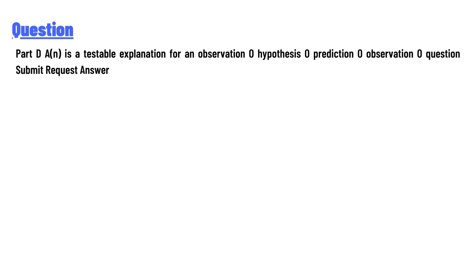Part A: A(n) is a testable explanation for an observation - hypothesis, prediction, observation, or question? Submit, request answer.